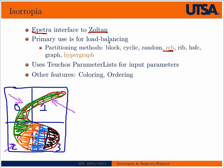As part of Isoropia, there are lots of options for how to choose to do the load balancing. I've highlighted two that are probably the most common use cases: RCB, which would provide the kind of load balancing scheme I've sketched out, or hypergraph type.